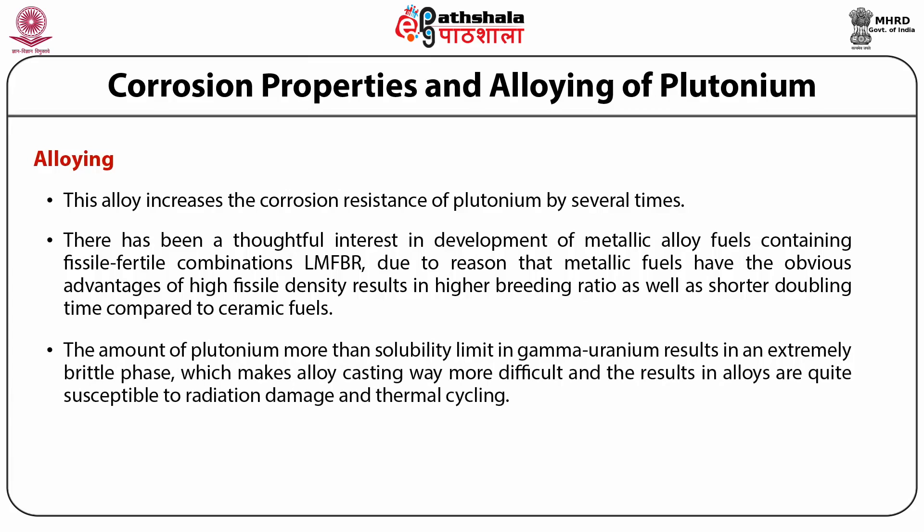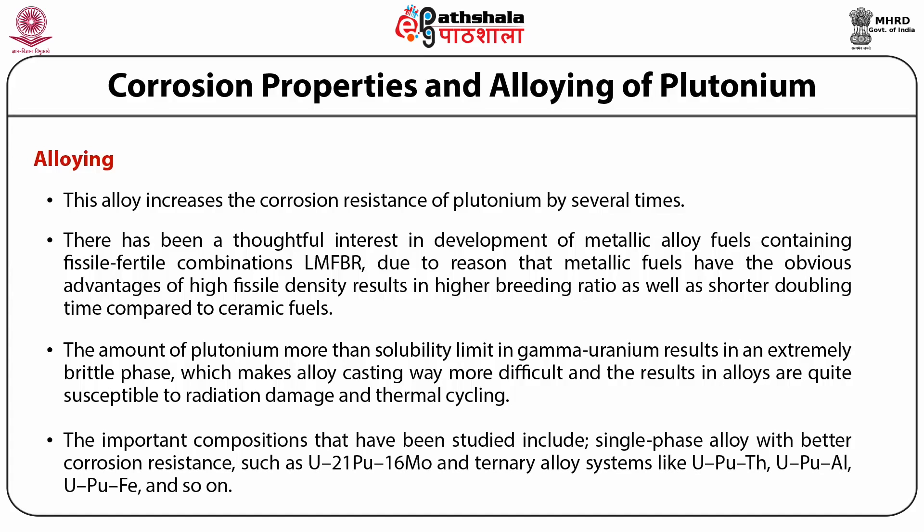The amount of plutonium beyond the solubility limit in gamma-uranium results in an extremely brittle phase, making alloy casting more difficult, and the resulting alloys are quite susceptible to radiation damage and thermal cycling. Important compositions studied include single-phase alloys with better corrosion resistance such as U-21Pu-16Mo, and ternary alloy systems like U-Pu-Th, U-Pu-Al, U-Pu-Fe, and others.